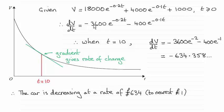So I've differentiated V with respect to t and you should be familiar with differentiating exponential functions like this. Differentiating e to the minus 0.2t is going to give us negative 0.2 times the 18,000 here, which comes to minus 3,600. And then it'll be e to the minus 0.2t.